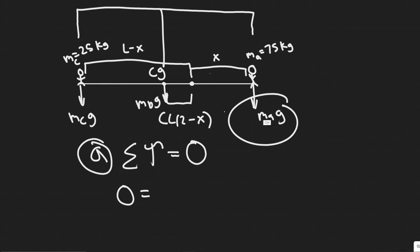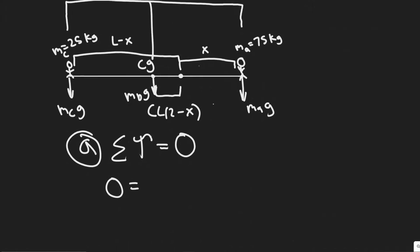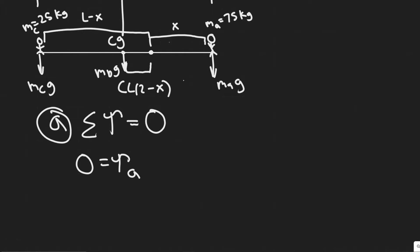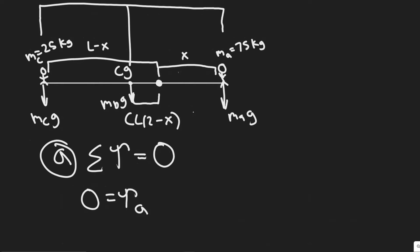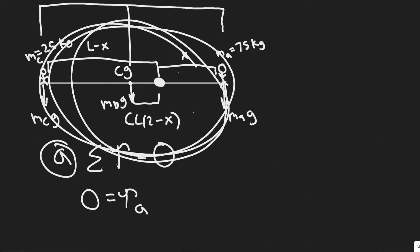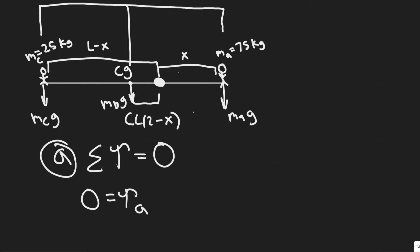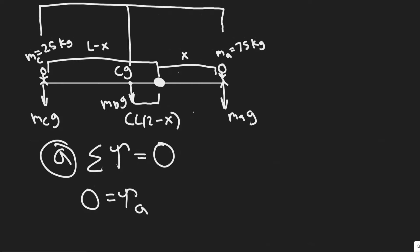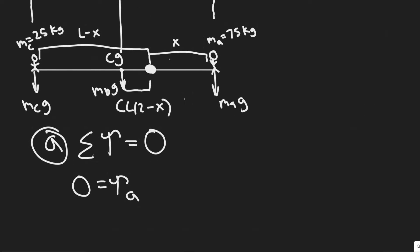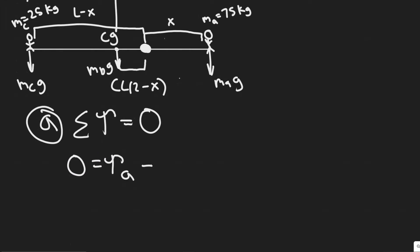We need to account for the direction of each torque. If the adult's force causes the board to rotate clockwise about the pivot, that torque is positive. The child's force causes rotation counterclockwise, so that torque is negative. Therefore, zero equals the torque due to the adult minus the torque due to the child.